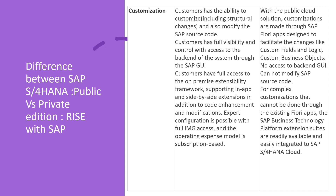In private edition, customers can modify standard SAP code. In public edition, customizations are made through SAP Fiori apps designed to facilitate changes like customer fields, logic, and customer business objects. There is no access to the backend GUI and you cannot modify SAP source code. For complex customizations that cannot be done through existing Fiori apps, the SAP Business Technology Platform extension suite is readily available and easily integrated with SAP S/4HANA Cloud.